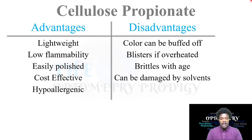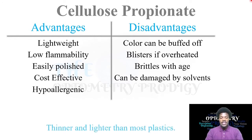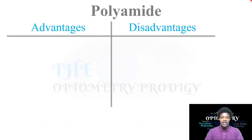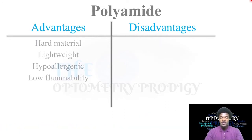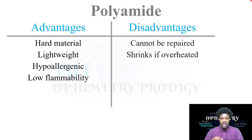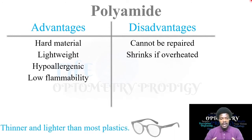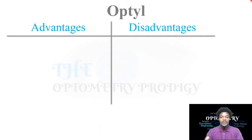Cellulose propionate is thinner and lighter than most plastics, so it is still a great option. Moving on to polyamide — the advantages are that it is a hard material, lightweight, hypoallergenic, and has low flammability. The disadvantages are that it cannot be repaired and it shrinks if overheated. It is still a good option because it is thin and lighter than most plastics, similar to cellulose propionate.